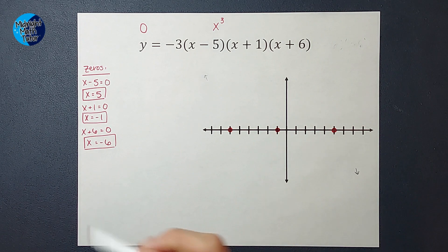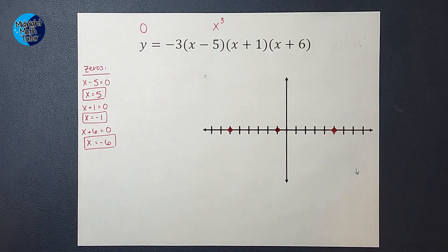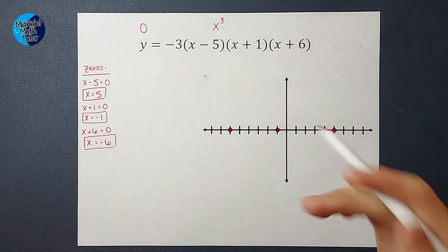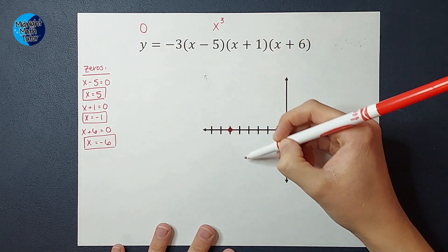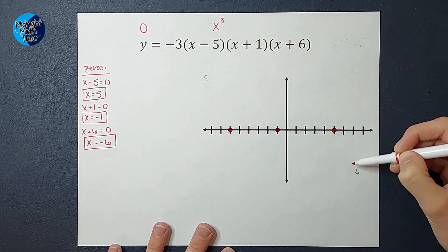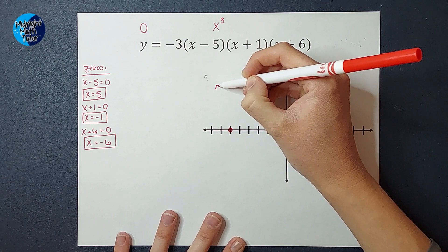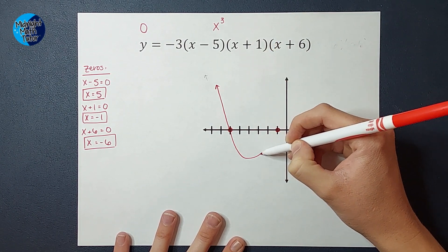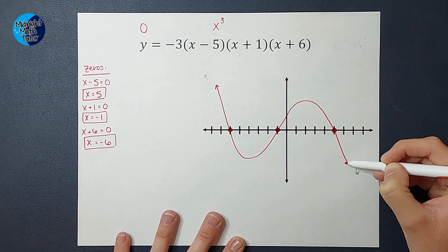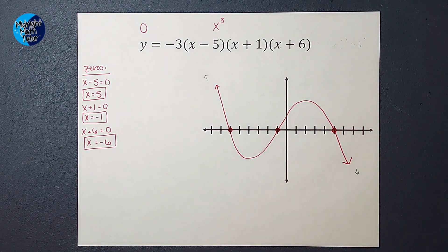So for these guys, since they all have an odd multiplicity of one, my graph is just going to go through each point with no bouncing. So we're going to go a little something like that. So I know it ends up on the left. It goes through all these points and it ends on the right down.